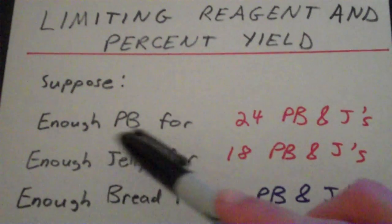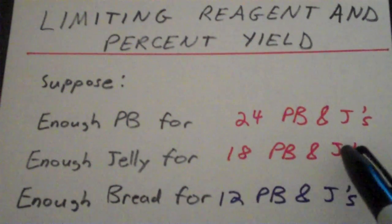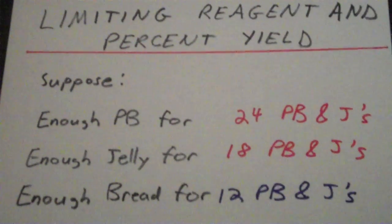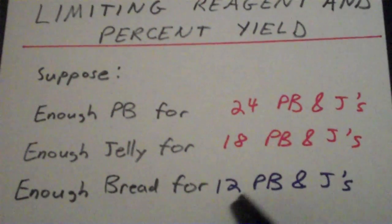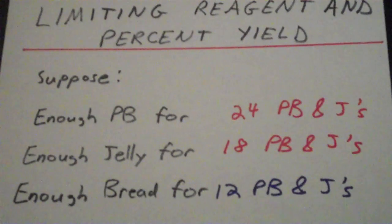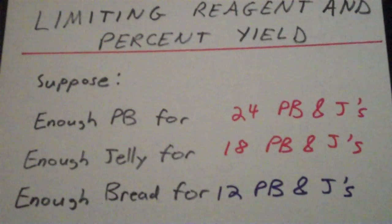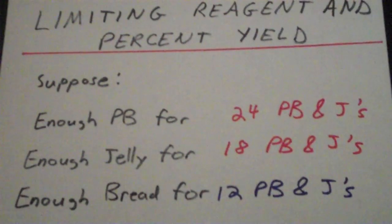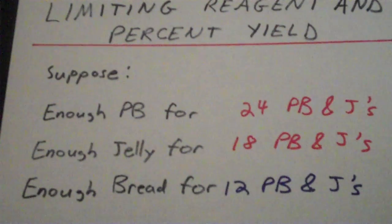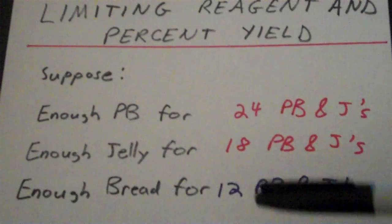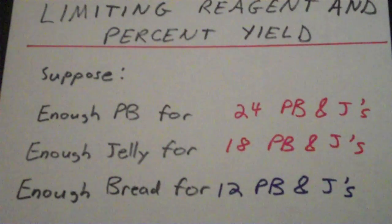So suppose you have enough peanut butter for 24 PB&J's, enough jelly for 18 PB&J's, and enough bread for 12 PB&J's. The question that I present to you is, how many PB&J's could you make altogether? If you answered 12, you're correct. The number of PB&J's that I can make is going to be limited to whichever one of these three that I have the least of. And in this case, it just happens to be bread.